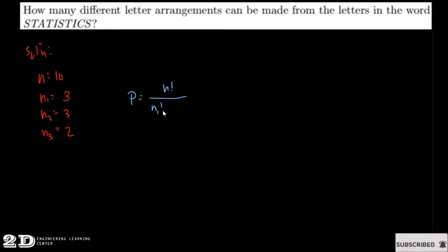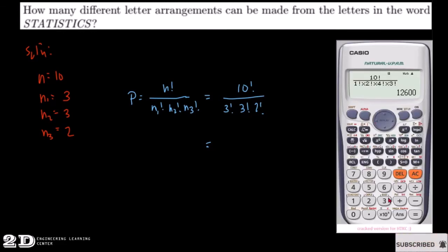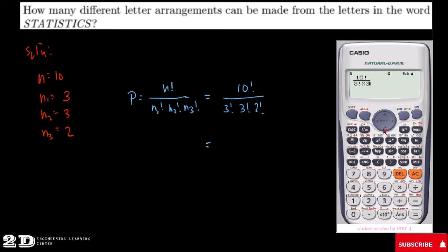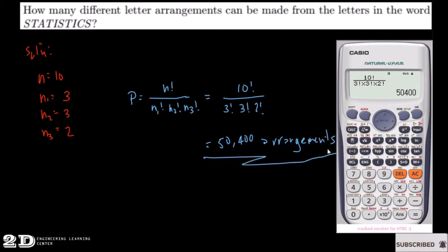So P = 10! / (3! · 3! · 2!). Using our calculator, we get 50,400. So there are 50,400 different arrangements, and this will be our answer.